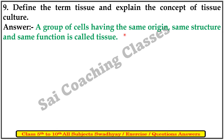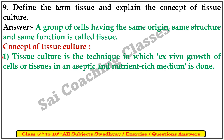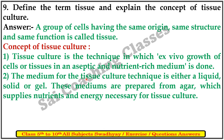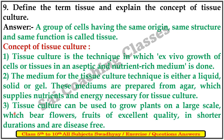A group of cells having the same origin, same structure, and same function is called tissue. Tissue culture is a technique in which ex vivo growth of cells or tissue in an aseptic and nutrient medium is done. The medium for tissue culture can be liquid, solid, or gel, prepared from agar, which supplies nutrients and energy. Tissue culture can be used to grow plants on a large scale which bear flowers and fruit of excellent quality in a shorter duration and are disease-free.